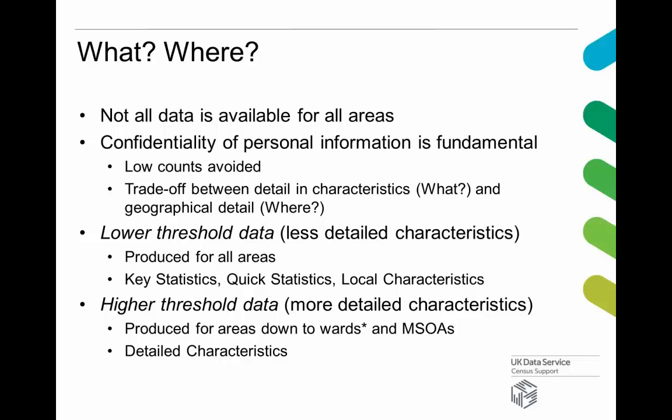The way in which this is implemented is to avoid low counts being produced by the census. So if there are only one or two people with a particular combination of characteristics in an area, that creates the danger of someone with some knowledge of the area being able to identify a person and then find out a further characteristic produced in combination with that. This results in a trade-off between detail in the characteristics and the geographical detail — basically, the smaller the geographies you want information for, the less detailed information you'll be able to get.